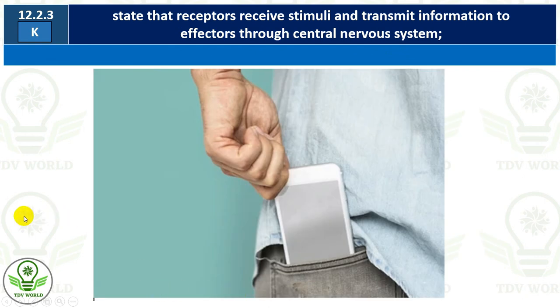The third example: when you put your hand in your pocket to take out your mobile phone, and there are other things in the pocket like keys or coins, you touch and identify which one is the mobile and take it out. How does this happen? First, you put your hand in the pocket — the stimulus is the touch of the mobile phone.